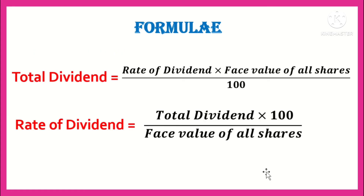Next is total dividend. We will solve a complete example on dividend in the next lecture. The formula is: Total Dividend = Rate of Dividend (in percentage, e.g. 9%) multiplied by Face Value of All Shares, divided by 100. Face Value of All Shares = Number of Shares multiplied by Face Value per share. In some examples, total dividend is given and you need to find the rate of dividend — for that, rearrange the formula: Rate of Dividend = Total Dividend multiplied by 100, divided by Face Value of All Shares.